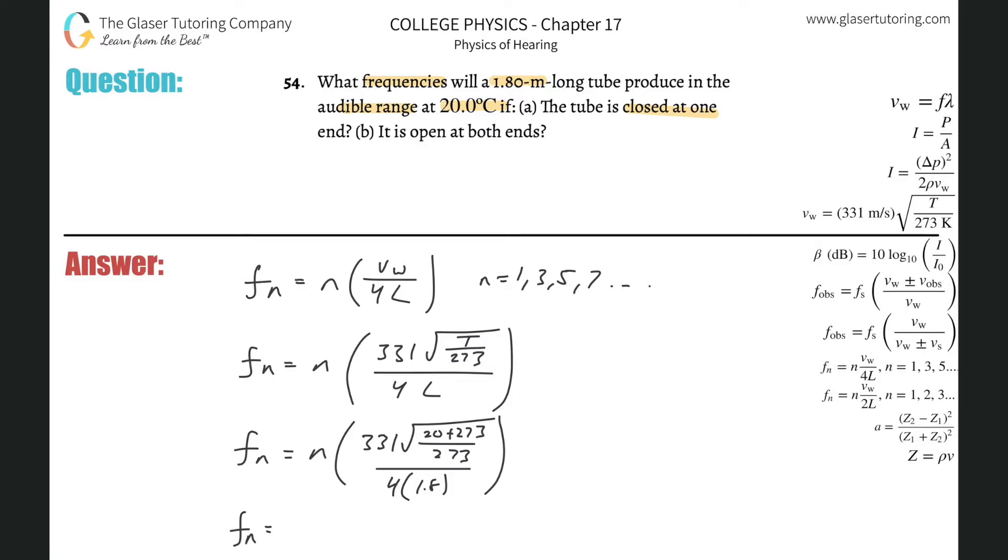And then we're going to get n times 47.6 or so, 47.6, right?